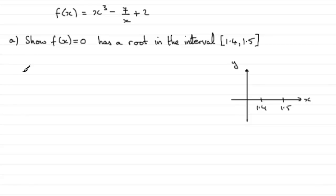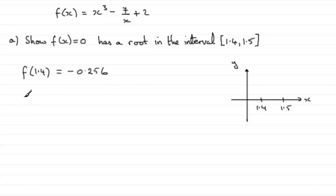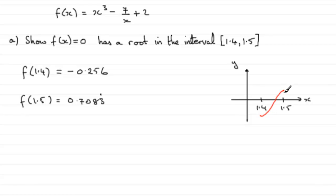So all we need to do is work out what f of 1.4 is and what f of 1.5 comes to. If you substitute 1.4 in for x, you should find that you get minus 0.256 exactly. And if you substitute 1.5 in for x, f of 1.5 turns out to be 0.7083 recurring. So you can see the graph's going from negative to positive.